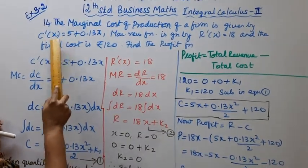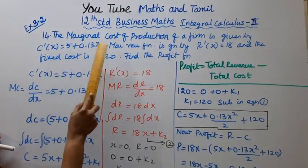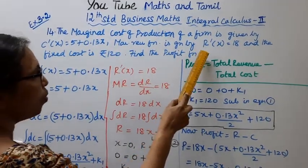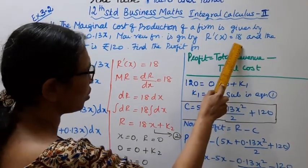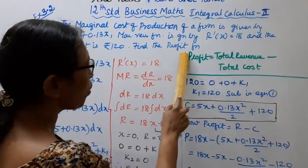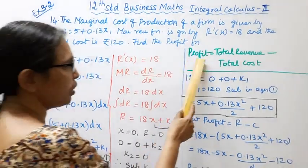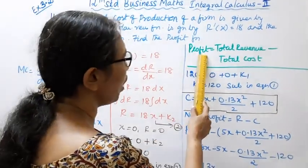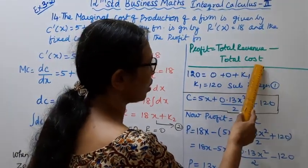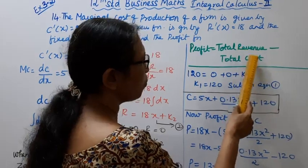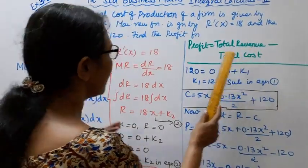Marginal cost C'(x), marginal revenue R'(x) equal to profit function. Profit formula: Total revenue minus total cost, that is R minus C.